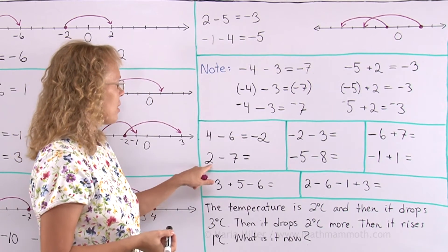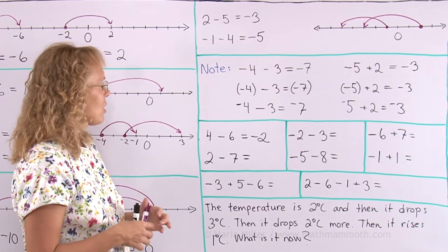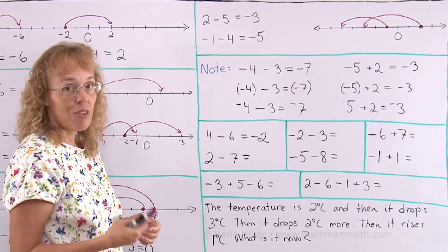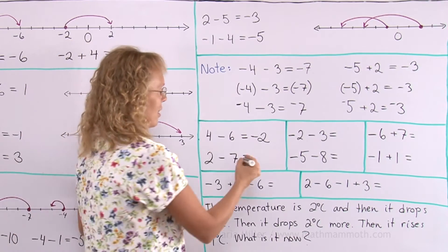2 minus 7. The same thing happens. You end up somewhere in the negatives. You can actually use a shortcut of subtracting 7 minus 2 equals 5. That tells you how many steps into the negatives you will get. The answer is negative 5.